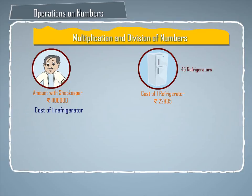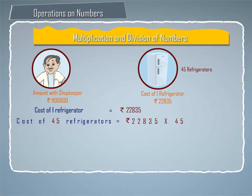Cost of one refrigerator is equal to rupees twenty two thousand eight hundred thirty five. To find the cost of forty five refrigerators, we multiply rupees twenty two thousand eight hundred thirty five by forty five, as shown on screen. So cost of forty five refrigerators is equal to rupees ten lakh twenty seven thousand five hundred seventy five.